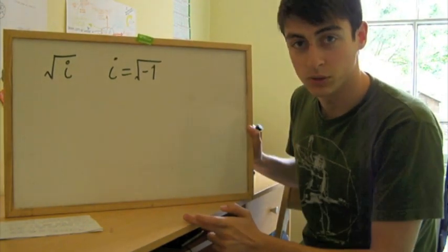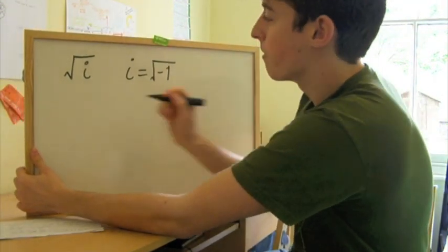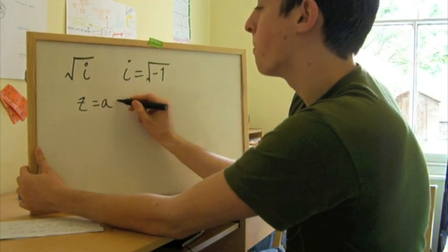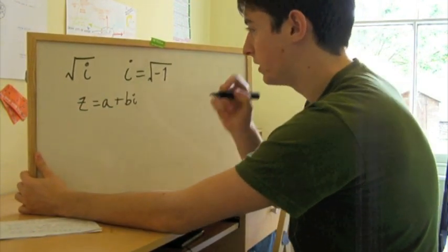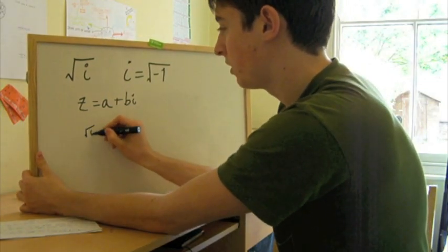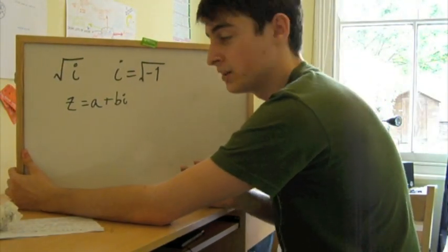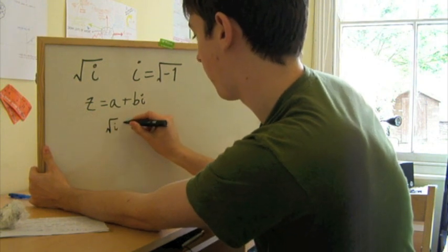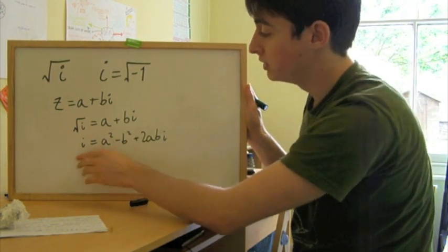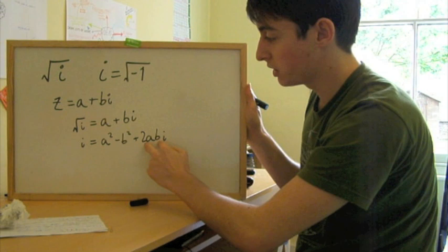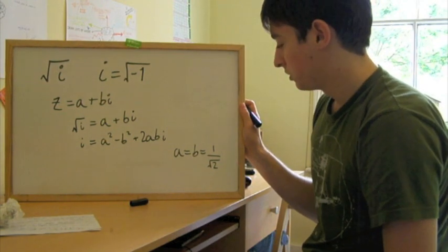Two ways of doing this problem, the nuts and bolts way or the clever way which earns brownie points. The nuts and bolts way, we say that the complex number z is equal to a real part and an imaginary part. We then say that root of i is equal to that complex number. Square both sides and equate the real and imaginary components. We know that 2ab has to equal 1, and a squared minus b squared has to equal 0. Then you can establish that a equals b equals 1 over root 2.